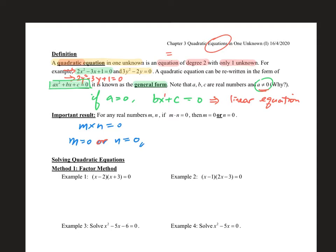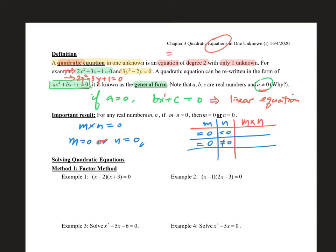Let's use a table to list out the possibilities. We look at m and n and the result of m times n. There are 4 possible cases: if m is 0 and n is 0, the product is 0. If m is 0 and n is non-zero, the product is still 0. If m is non-zero and n is 0, the product is still 0. But if both are non-zero, the product is non-zero.